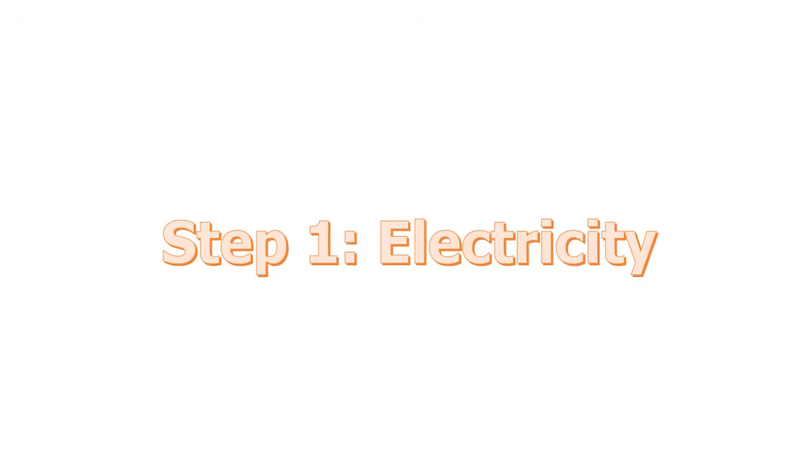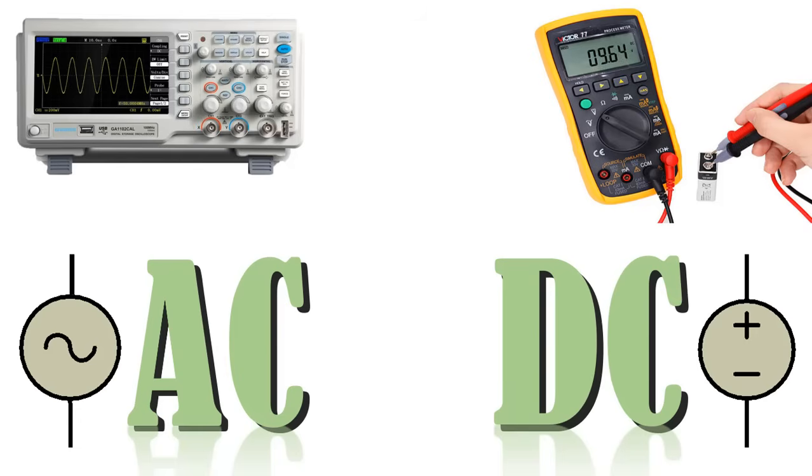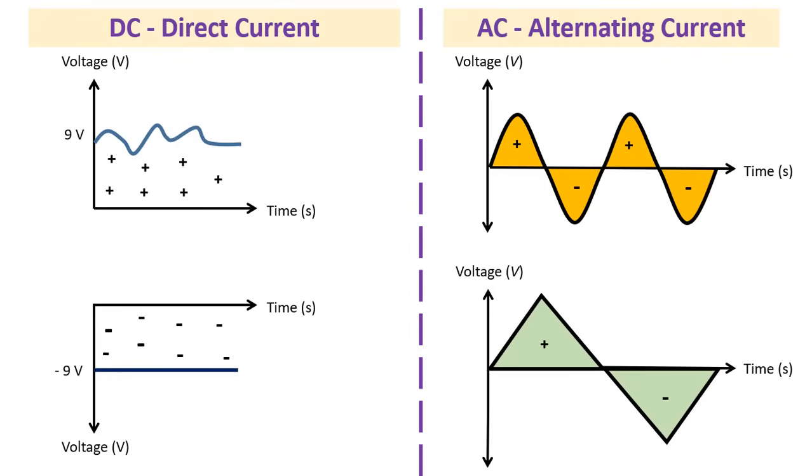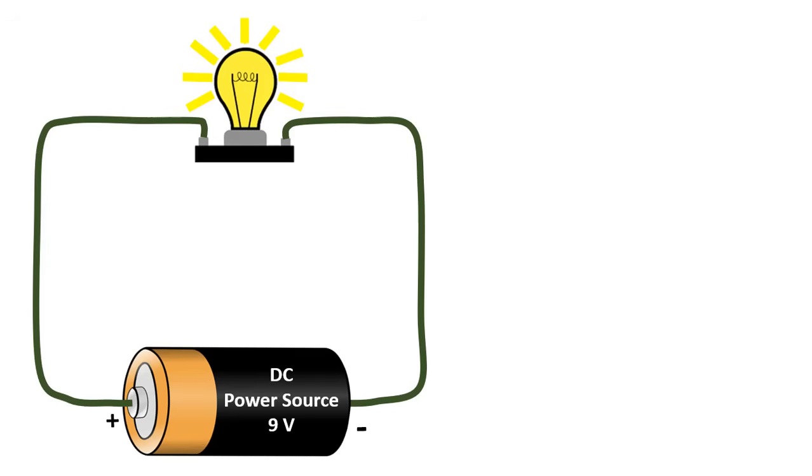Step 1. Electricity. There are two types of electrical signals, those being alternating current and direct current, or AC and DC. With direct current, electricity flows in one direction between power and ground. In this arrangement, there is always a positive source of voltage and ground source of voltage. You can test this by reading a battery with a multimeter.